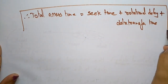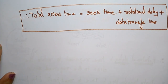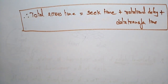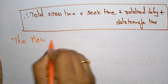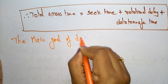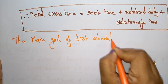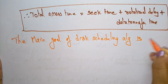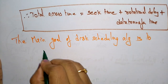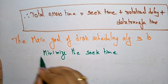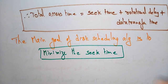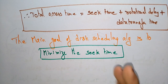The main goal of disk scheduling algorithms is to minimize the seek time. That is why we use different types of disk scheduling algorithms — based on user requirements, we apply different algorithms to minimize the seek time as much as possible.